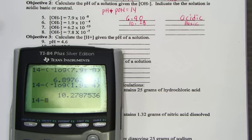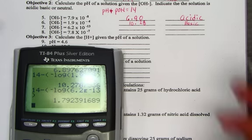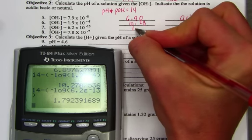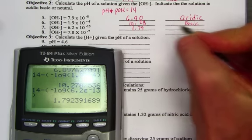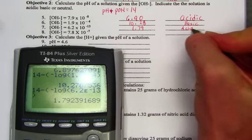Letter C would have us do 14 minus, and then again a parenthesis, the negative log of 6.2 E negative 13. The 14 minus the pOH gives us a pH reading of 1.79, and that's quite acidic.